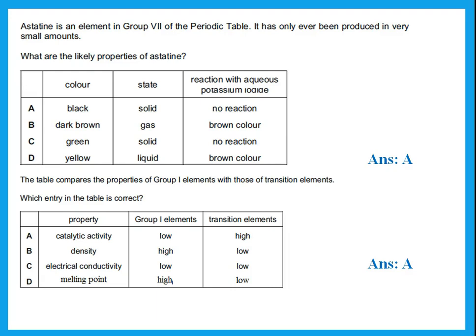Now let's look at the others. Density? No, transition should be higher density. Electric conductivity, actually both of them have electrical conductivity because they are both metals. Melting point? No, transition metals should have very high melting point. So the answer is A.